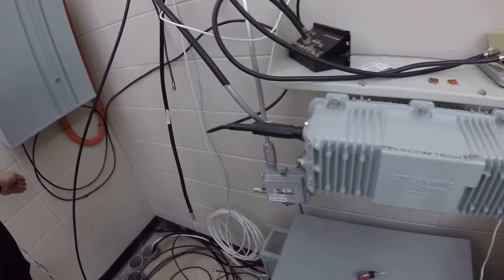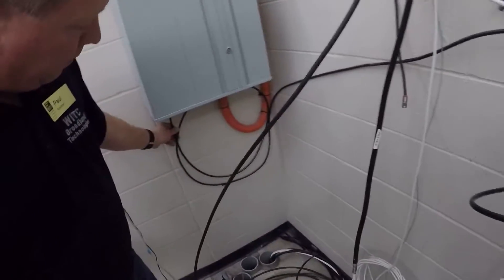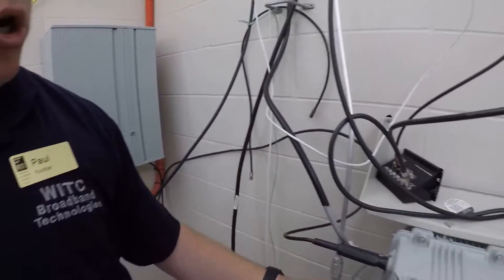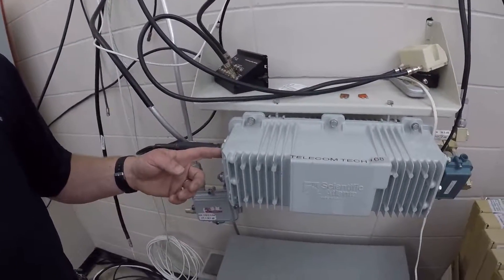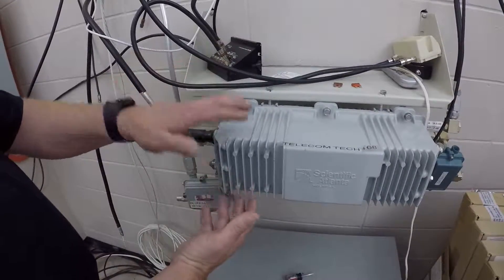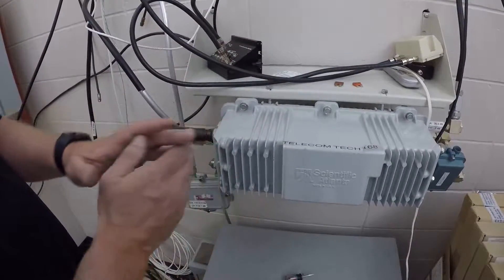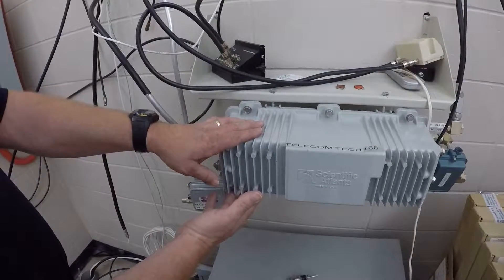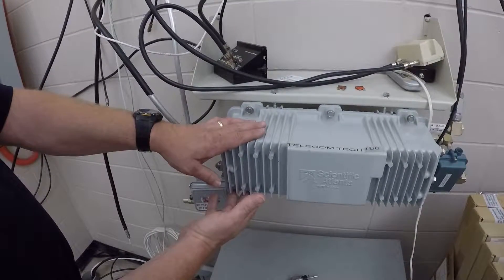So our optical fiber is right here. It comes out of here, comes over and then is terminated with some type of connector. You can't open it up because if you open it up you lose signal and it'll take the whole system down. So it converts that light signal into electrical form, RF.